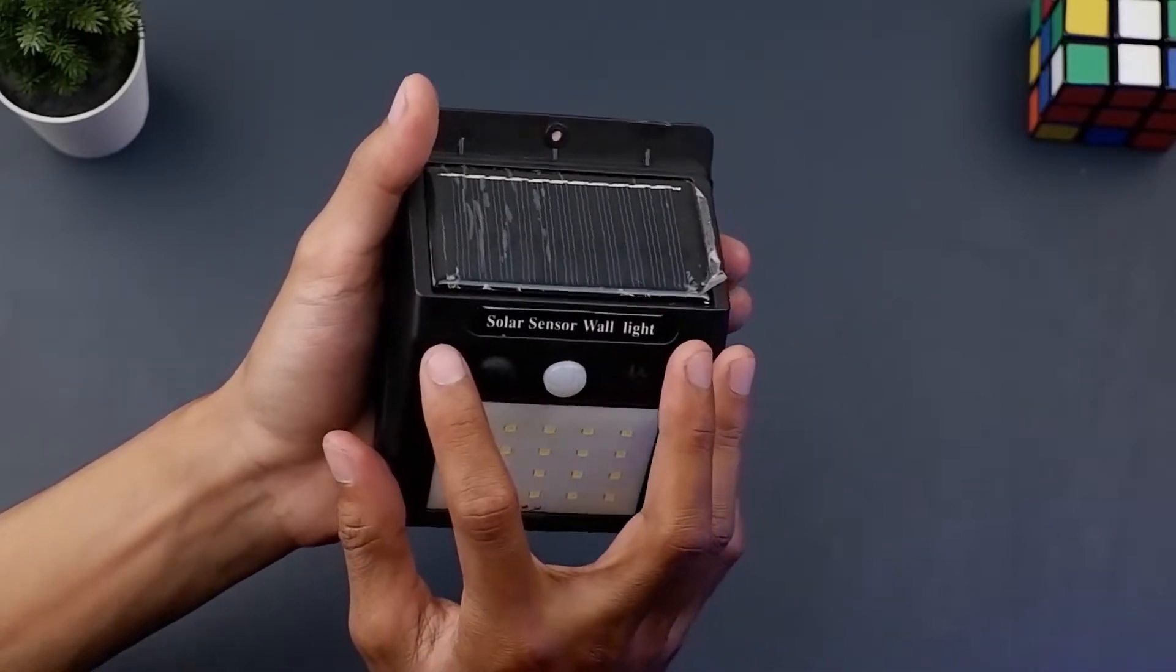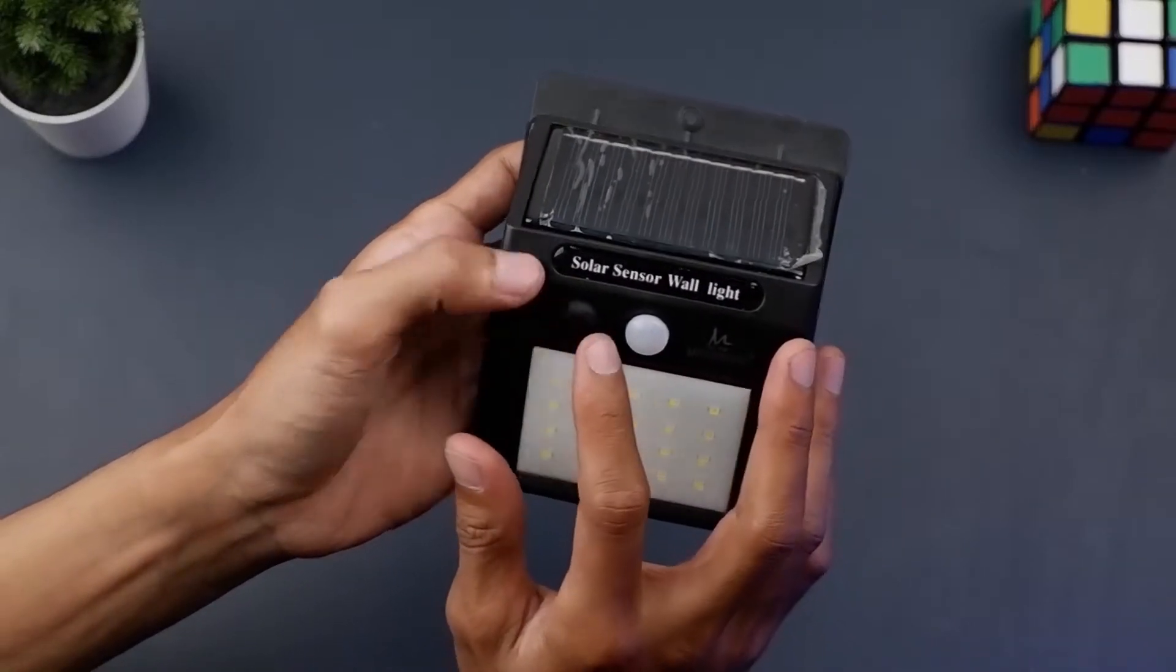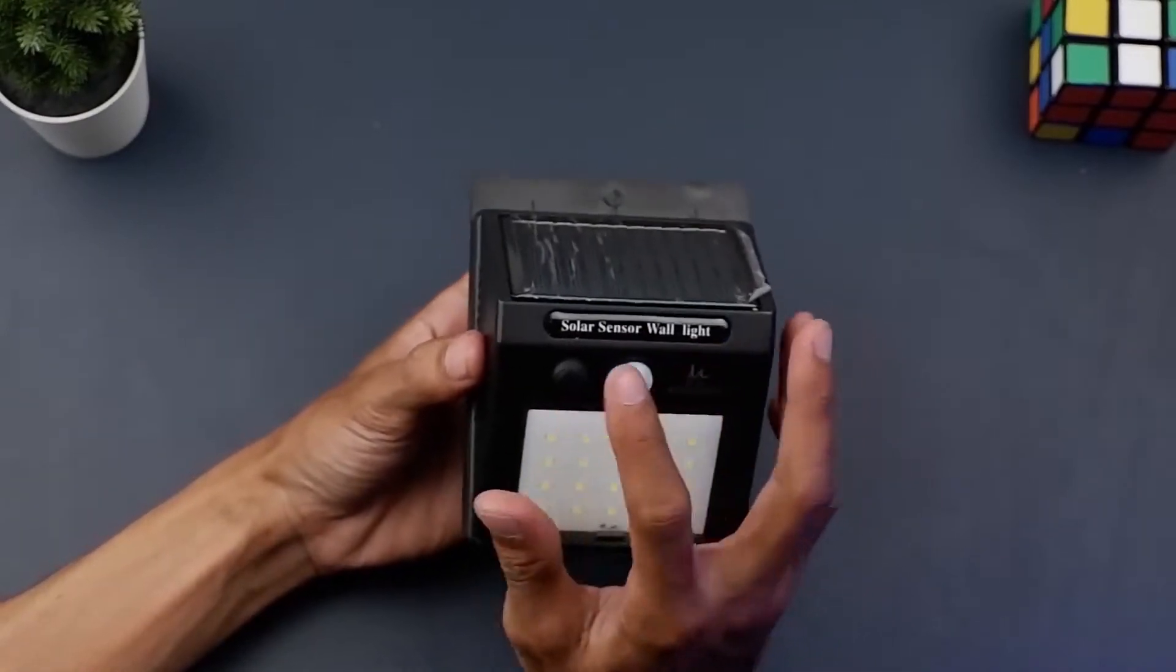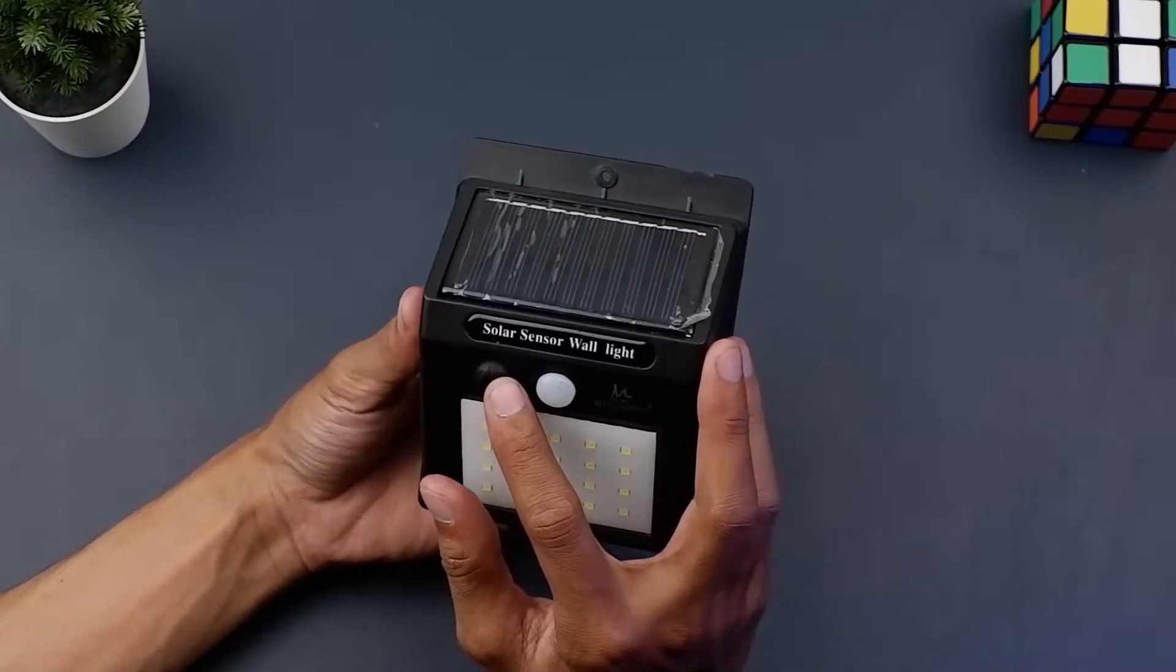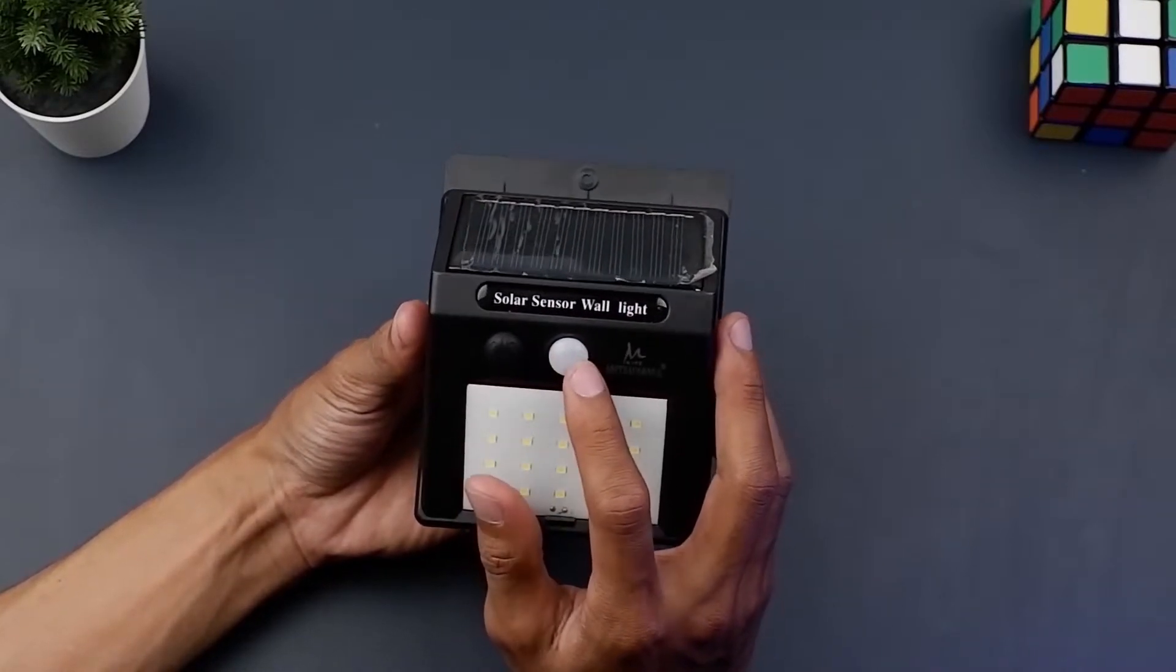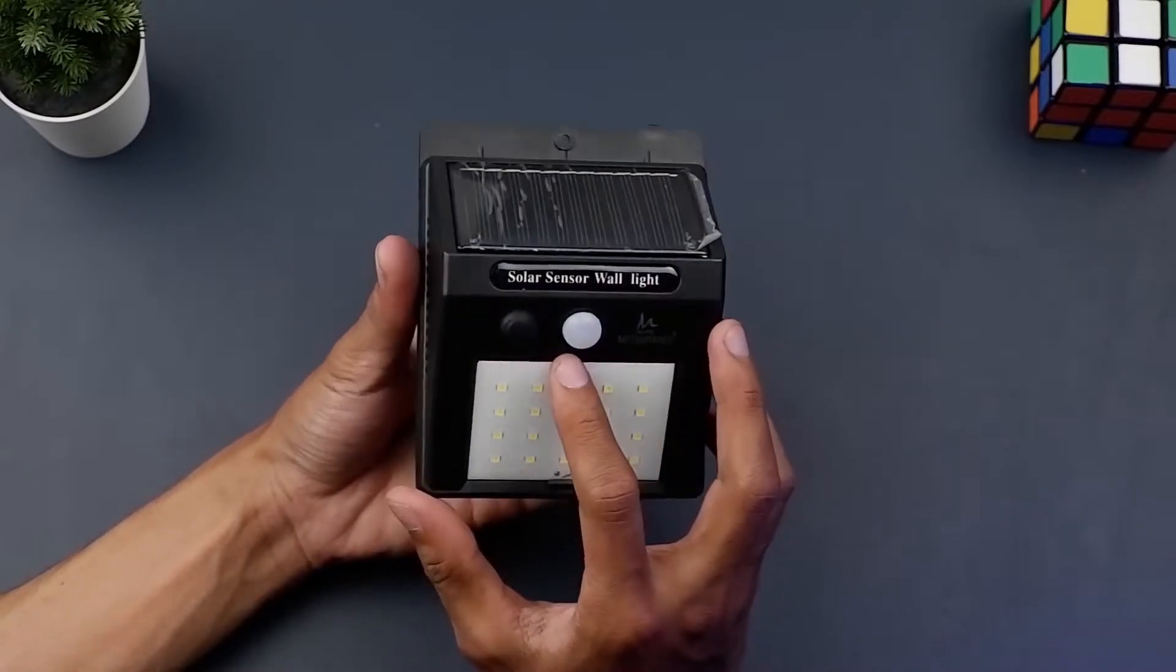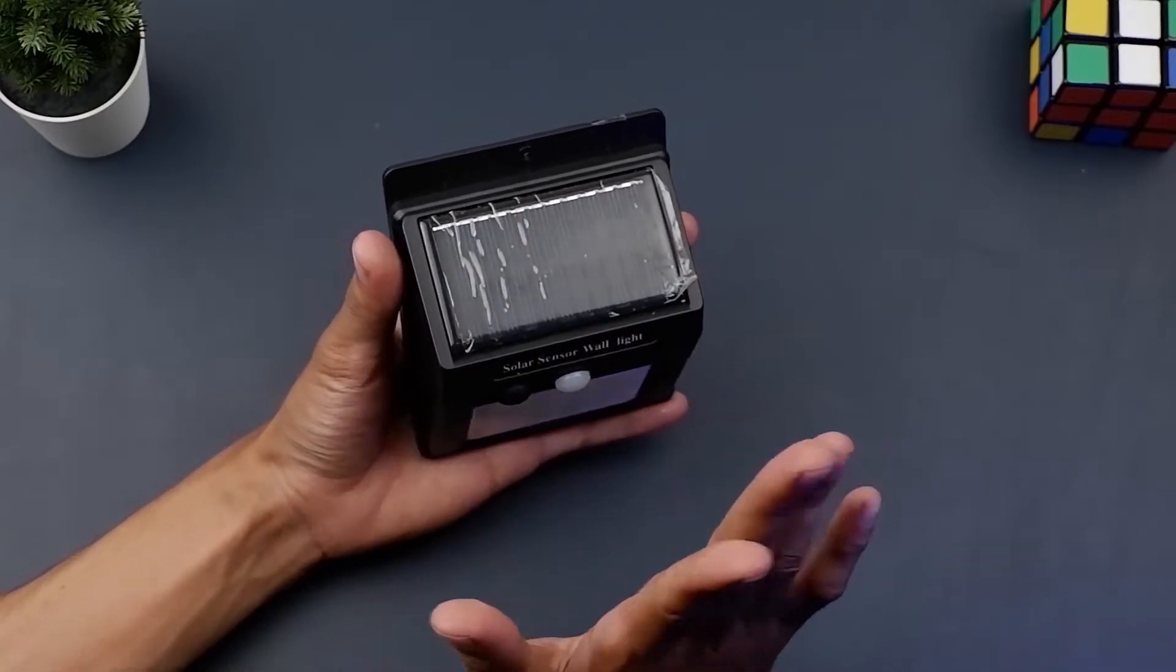Terdapat tombol switch dengan dua mode yaitu off dan auto. Jadi switch ini hanya bisa mematikan lampu dan jika kalian tekan lagi akan kembali ke mode otomatis. Lalu disini terdapat sensor gerak dengan sudut jangkauannya 120 derajat. Dan lampu ini akan otomatis nyala jika mendeteksi ada gerakan di depannya.